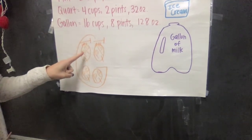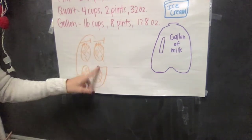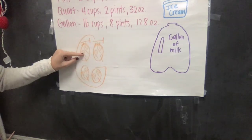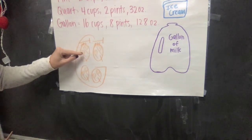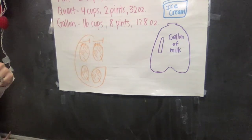But then there are two pints in every quart. So that helps me to remember that in a gallon there are two, four, six, eight pints. And if there are two cups in every pint, then I know I have four, eight, twelve, sixteen cups in a gallon.